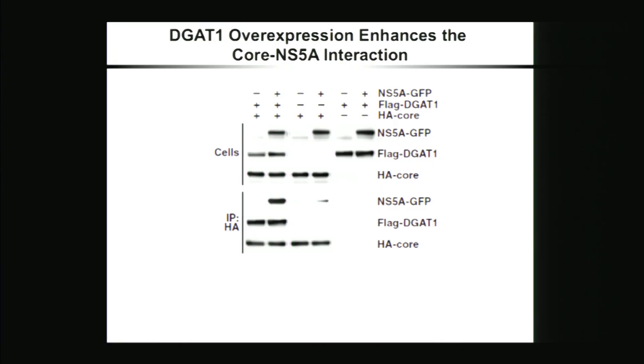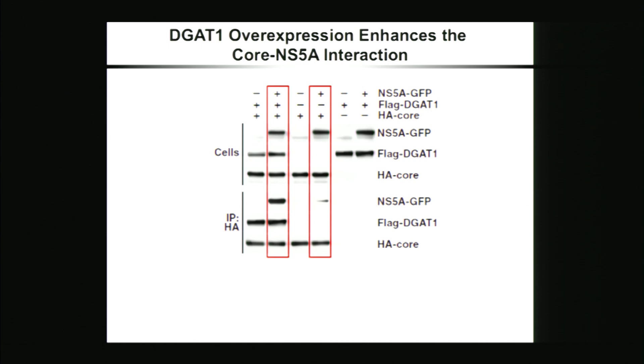So two viral proteins, NS5A and core, interact with DGAT1, and these viral proteins are also supposed to interact with each other. However, this has been a little bit controversial in the literature, and when we tried it ourselves—co-expressing NS5A and core and immunoprecipitating for core—the co-immunoprecipitation of NS5A was very hard to detect. Interestingly, when we also overexpressed FLAG-DGAT1 in the cells, we were able to strongly enhance the interaction between the two viral proteins.